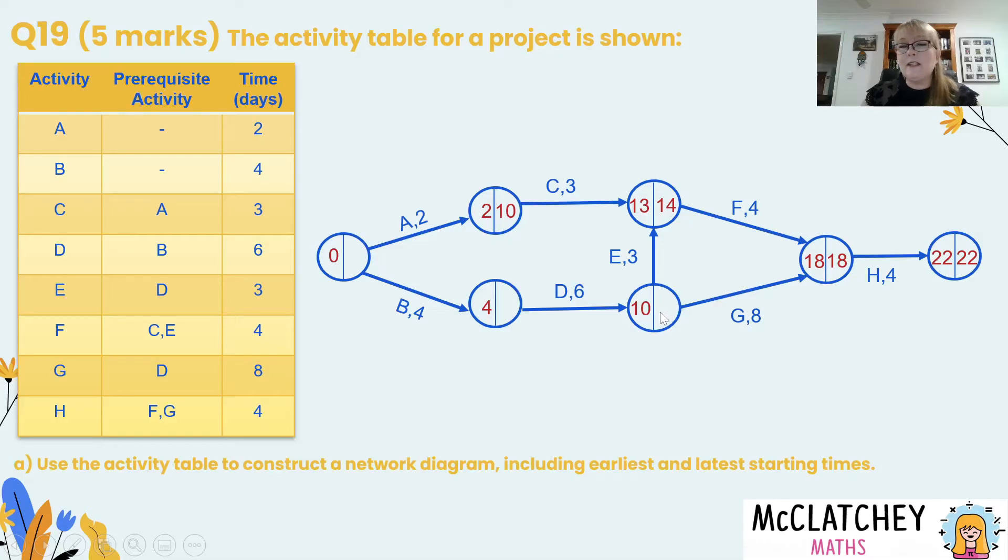Now when we're going backwards through the network we actually choose the lowest option. So forward highest backwards lowest so that would give us 10. Then we've got only one choice going backwards that gives us a 4 and then of course at our starting point we have our second zero there. So now we have forward and backward scanned through the network and evidence of that was our third mark.